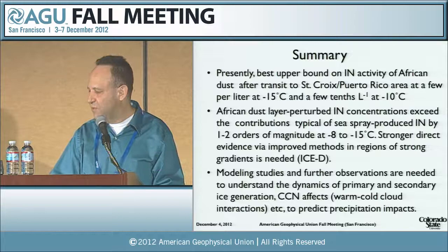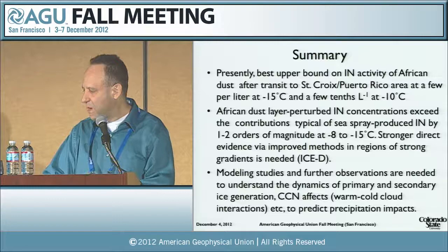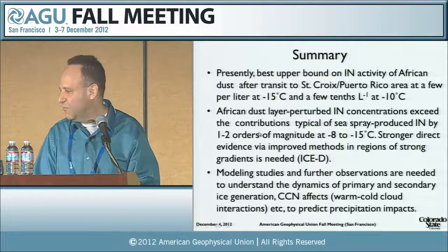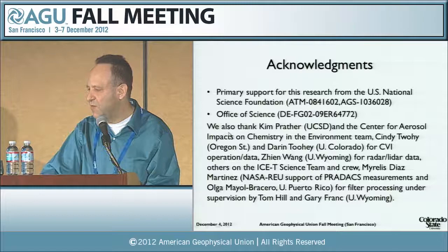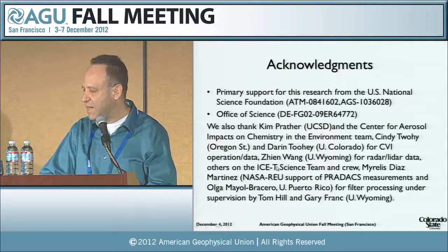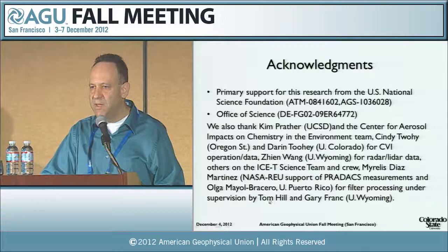Modeling studies and other cloud observations would be needed to understand how these dust particles interact in clouds to affect cloud droplet processes, the interaction between warm and cold phases, and primary and secondary ice generation, in order to predict impacts on precipitation. Primary support comes from the U.S. National Science Foundation, the DOE Office of Science for parameterization work, Kim Prather and the Center for Aerosol Impacts on Chemistry and the Environment for sea spray measurements, and Cindy Tuohy, Darren Tuohy, Zhen Wang, Miralise Diaz-Martinez, Tom Hill, and Gary France.